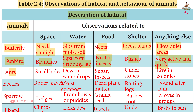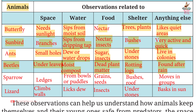Ants: found in small holes, drink dew or water drops, eat sugar and insects, shelter under stones, live in colonies. Beetles: found under leaves, need moist compost, eat dead plant matter, shelter in rotting logs, found after rain. Sparrow: found on ledges, drinks from bowls or puddles, eats grains and seeds, shelters in bushes and roofs, moves in groups. Lizard: climbs walls, licks dew, eats insects, shelters under stones, basks in the sun.